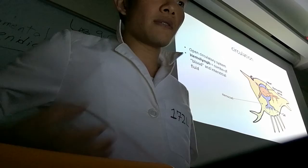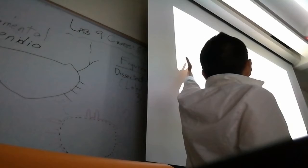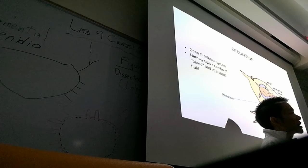As far as the circulatory system, just like you guys said from the quiz, crabs have an open circulatory system. Their blood is called hemolymph - arthropod blood is called hemolymph. It's a combination of blood and interstitial fluid.